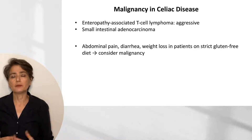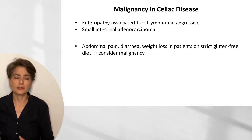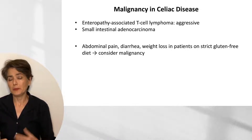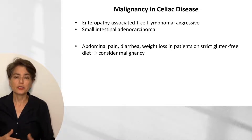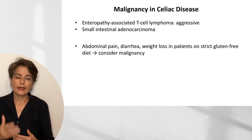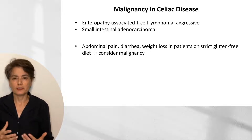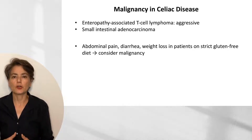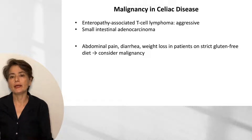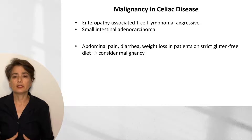Another malignancy that can develop in celiac disease is small intestinal adenocarcinoma, similar to what we see in H. pylori-associated gastritis, where the cycle of injury and regeneration offers the opportunity for a mutation to occur. These individuals can present with abdominal pain, diarrhea, or weight loss even on a strict gluten-free diet, so malignancy should be considered.